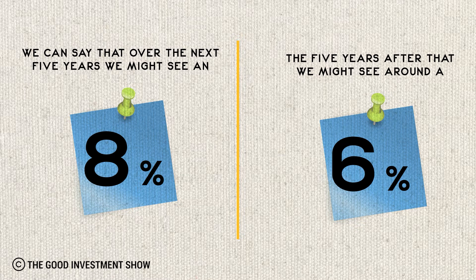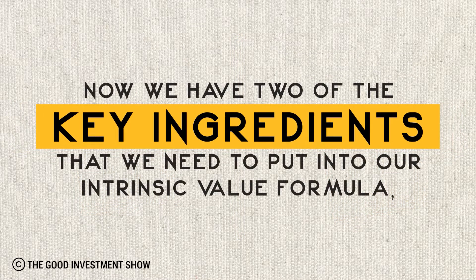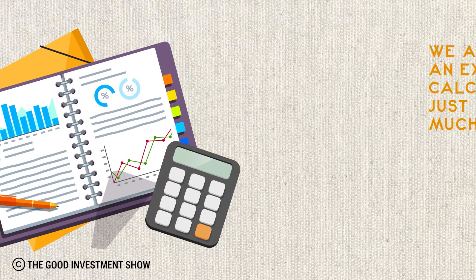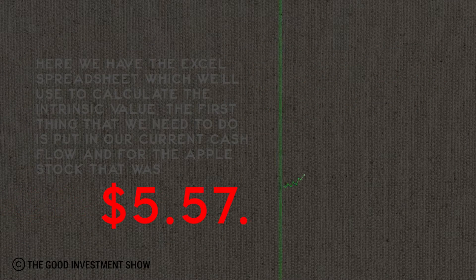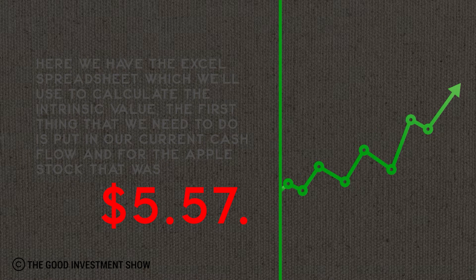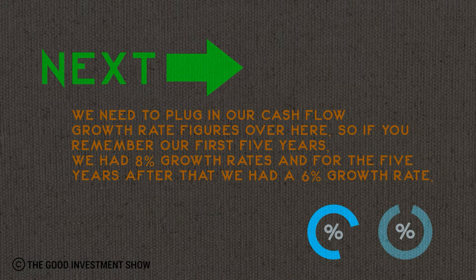Now we have two of the key ingredients we need to put into our intrinsic value formula. We're going to open an Excel spreadsheet calculator because it makes things so much easier. The first thing we need to do is put in our current cash flow — for Apple stock, that was $5.57. Next, we plug in our cash flow growth rate figures: for the first five years, an 8% growth rate, and for the five years after, a 6% growth rate.